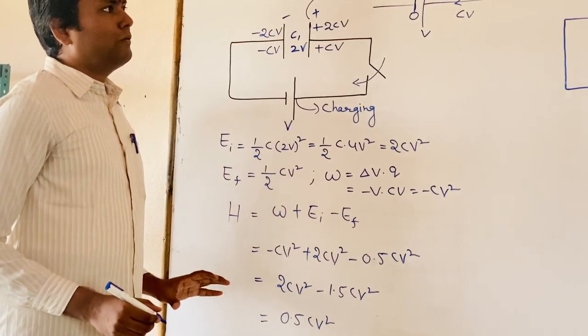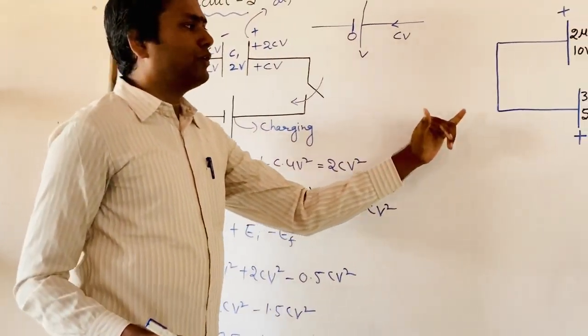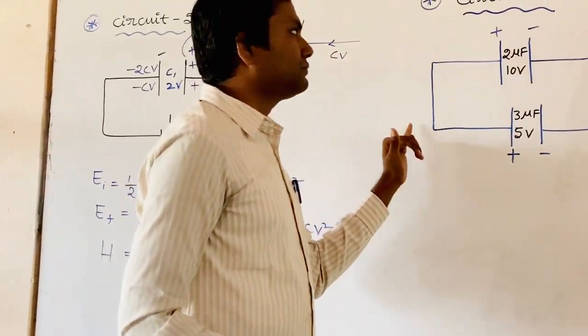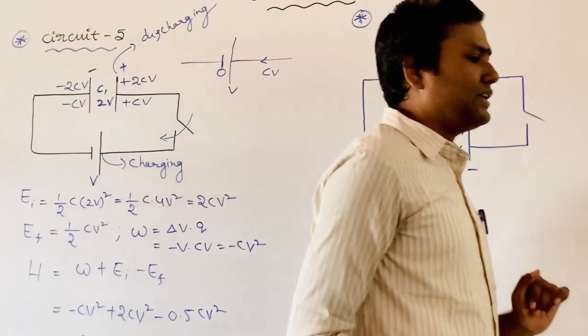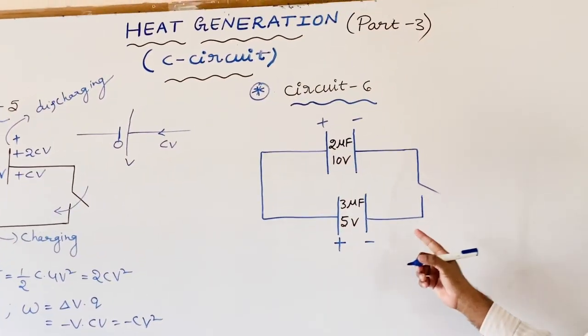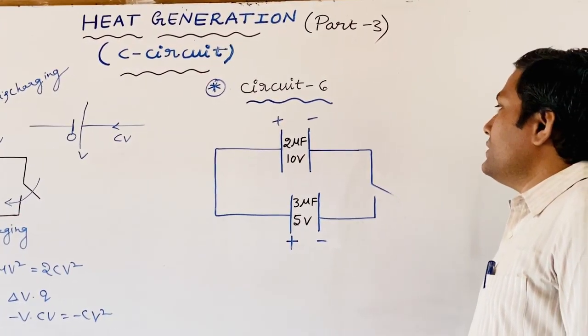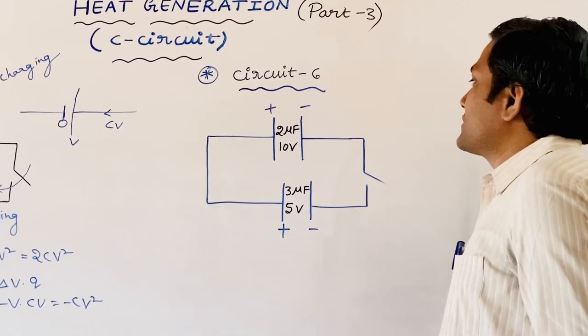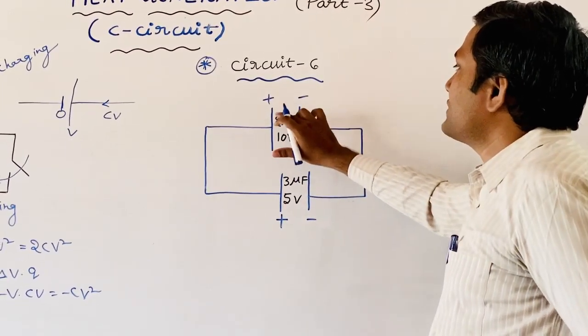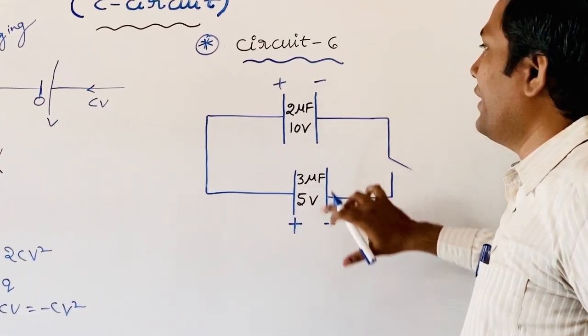Now let us look at one more example — Circuit 6. In Circuit 6, you see two capacitors and there is no battery. One capacitor is initially charged to 10 volts, another capacitor is charged to 5 volts.